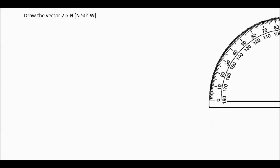Here we have a vector that is 2.5 Newtons - that is the unit for force. And the arrow is pointing north 50 degrees west.